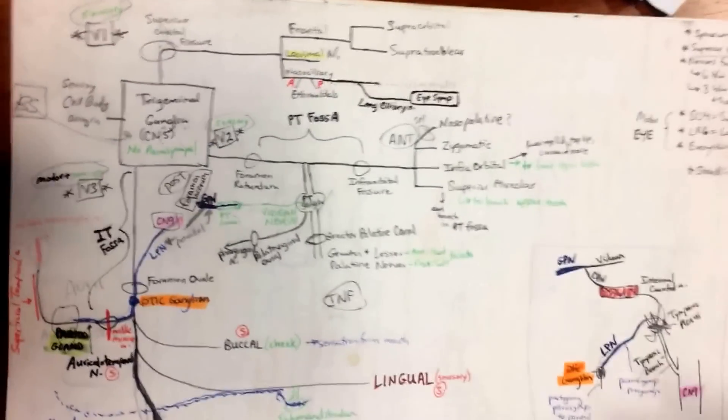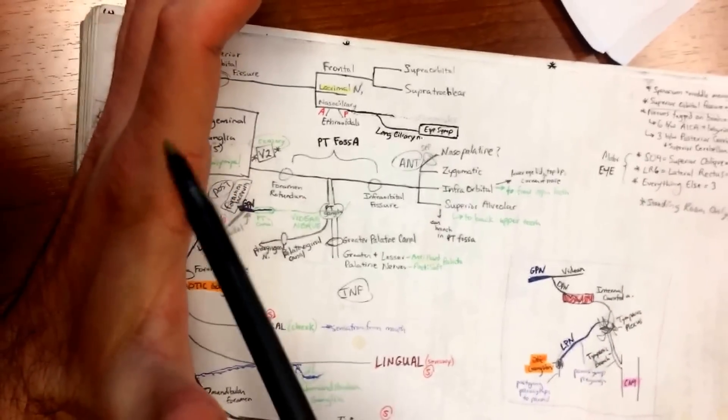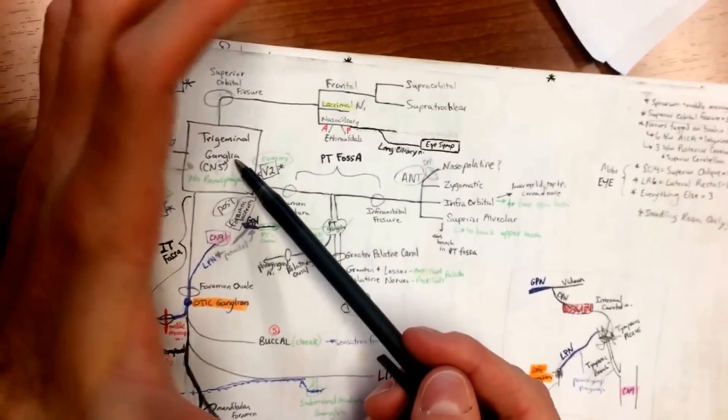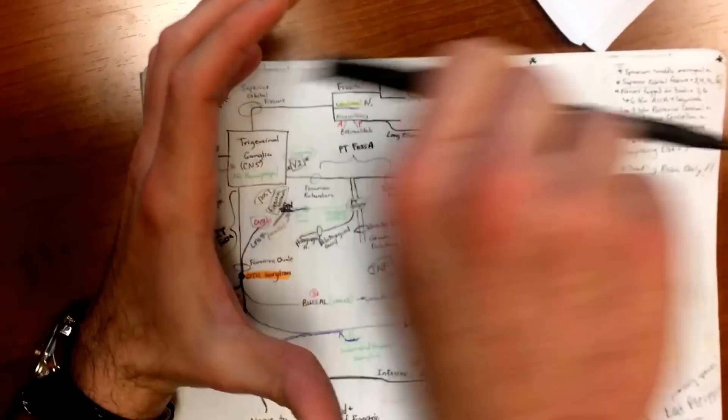So we're going to keep going through. And so one thing, it's good to keep in mind for V2, this is all in 3D. If this is the base of your skull, and if you just kind of think of the trigeminal ganglia being here in your skull, and we're busting anteriorly, so we're moving forward like that.